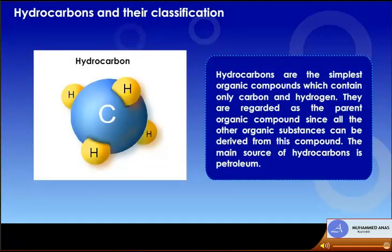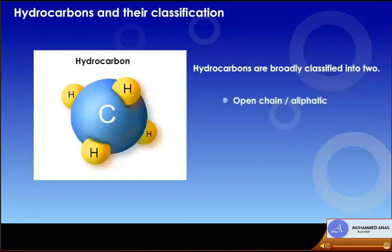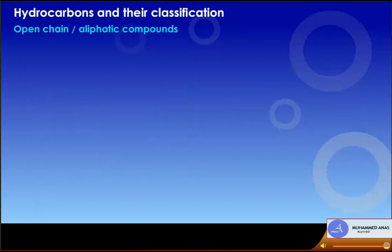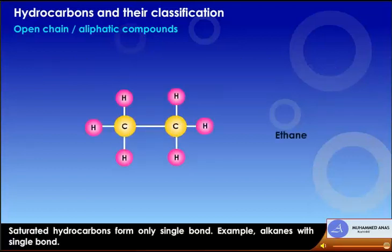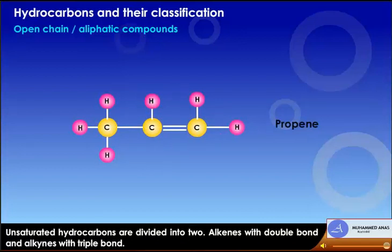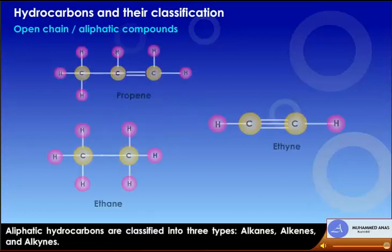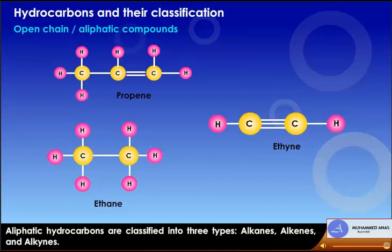Hydrocarbons are the simplest organic compounds containing only carbon and hydrogen. They are regarded as the parent organic compounds since all other organic substances can be derived from them. The main source of hydrocarbons is petroleum. Hydrocarbons are broadly classified into two: open chain or aliphatic, and carbocyclic compounds. Aliphatic hydrocarbons are further divided into saturated and unsaturated. Saturated hydrocarbons form only single bonds (alkanes). Unsaturated hydrocarbons include alkenes with double bonds and alkynes with triple bonds.